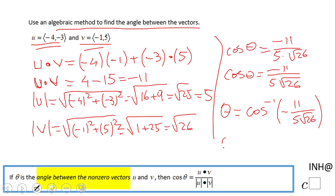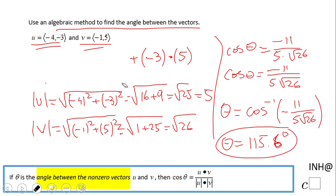I'll round it to the nearest degree. That is 115.6 degrees. That is the angle between these two vectors. Let's take a look at a graphical approach to make sure it makes sense.